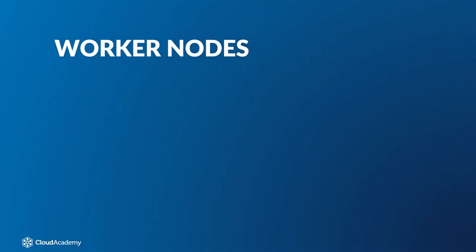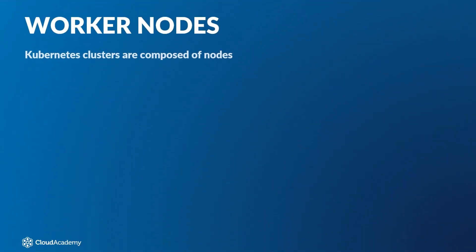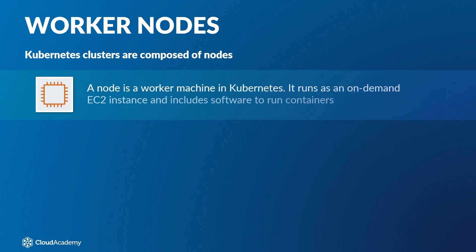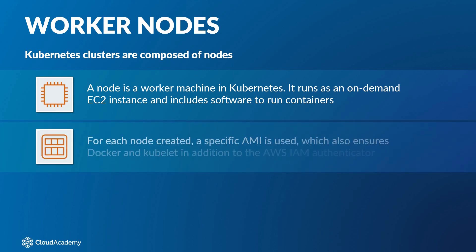Kubernetes clusters are composed of nodes, and the term cluster refers to the aggregate of all the nodes. A node is a worker machine in Kubernetes and runs as an on-demand EC2 instance, and includes software to run containers managed by the Kubernetes control plane. For each node created, a specific AMI is used which also ensures Docker, the kubelet, and the AWS IAM Authenticator are installed for security controls.